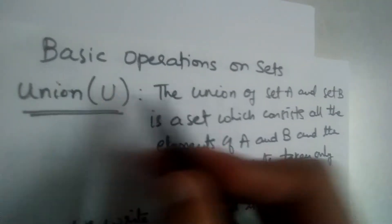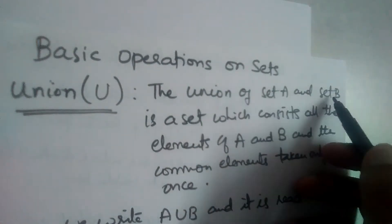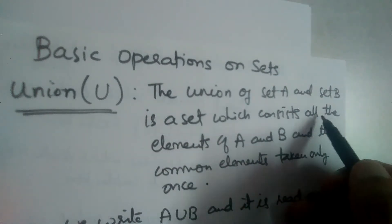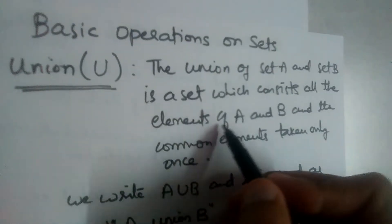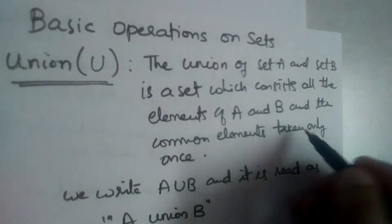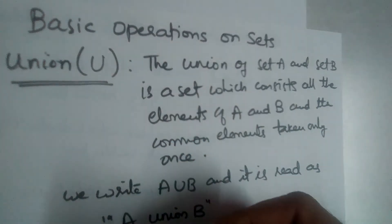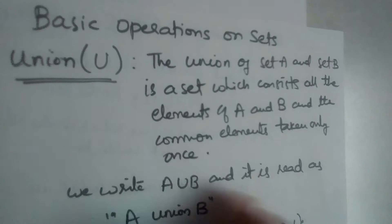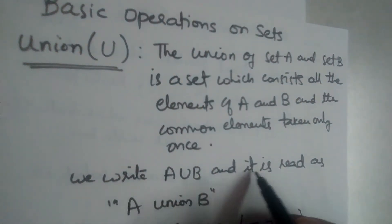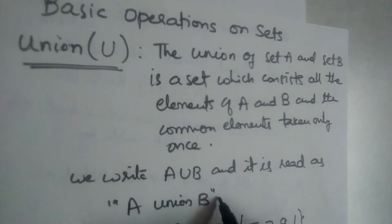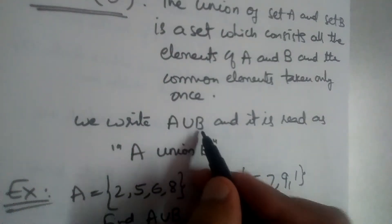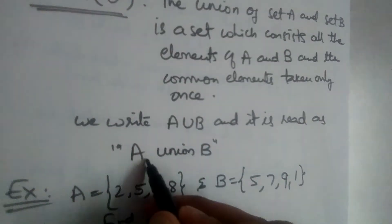Union is represented by the symbol ∪. The union of set A and set B is a set which consists of all the elements of set A and set B, with the common elements taken only once. We write it as A ∪ B, and it is read as 'A union B'.